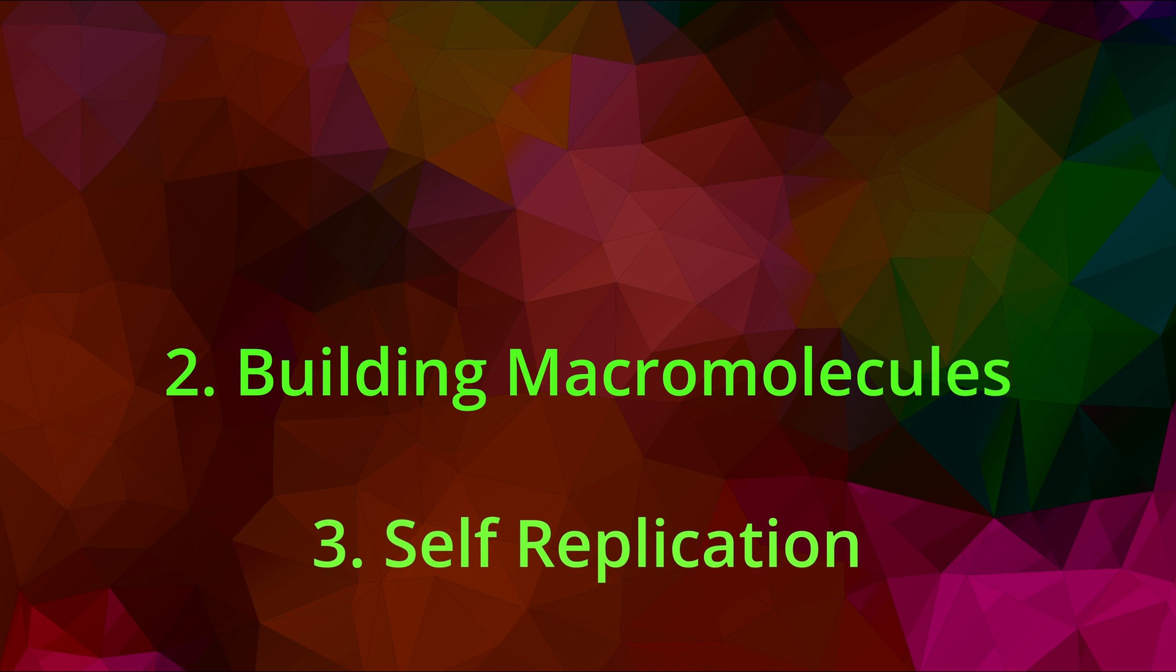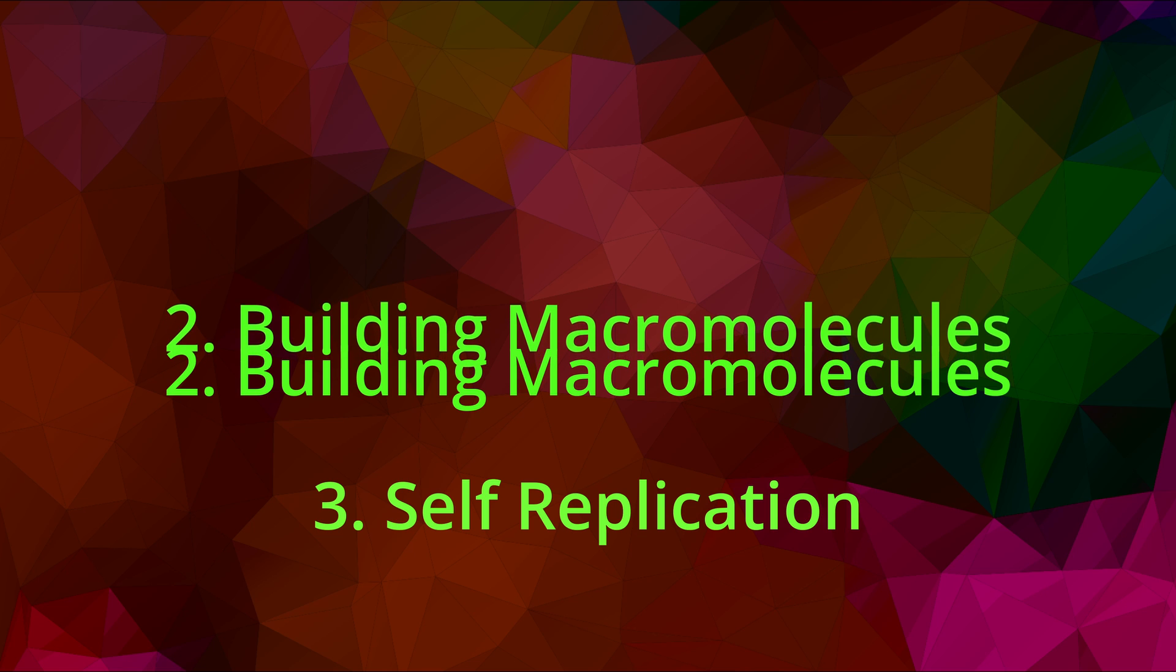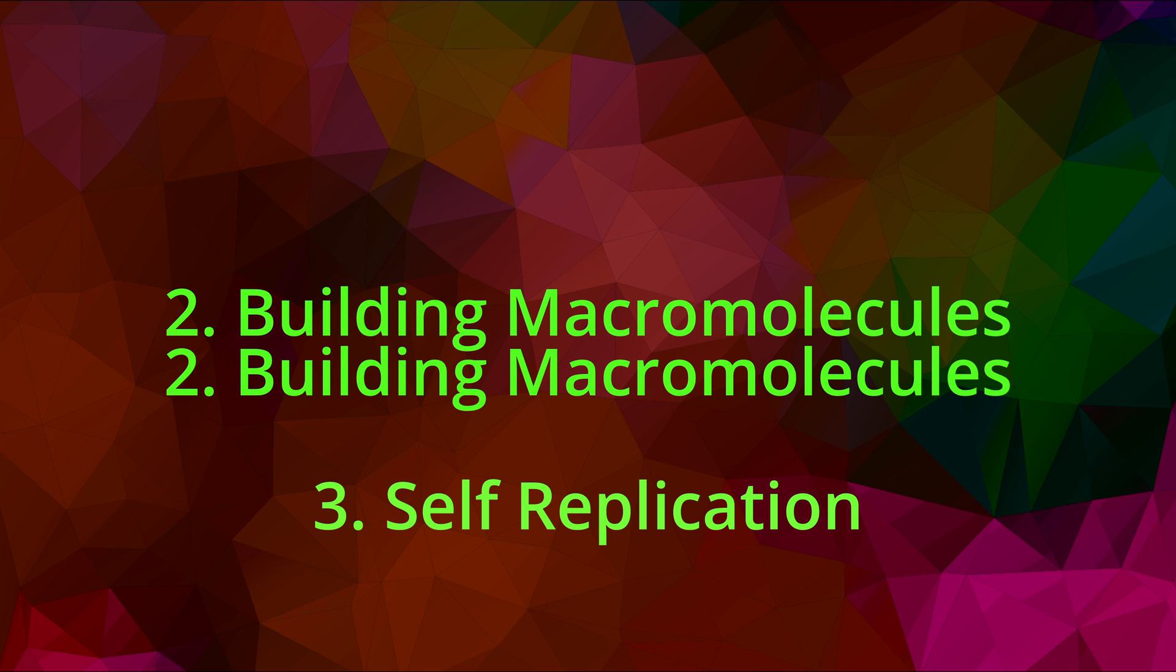And then step three of self-replication presumably only happens once one rather capable, relatively massive biomolecule comes into existence. But it also could theoretically require more than one biomolecule. It could be two or more biomolecules working in concert, as is the case in life today. And that would mean that step two might actually have to happen multiple times and in different ways.